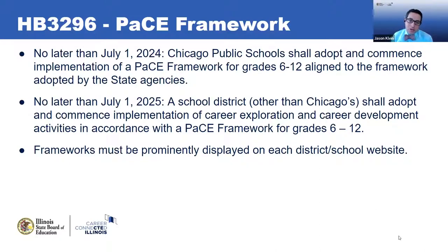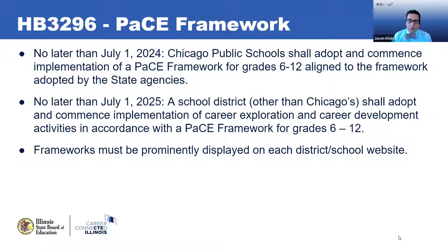All school districts are required to either adopt the state-provided framework — which is required to be updated by the state agencies by July 1, 2023 — or a locally written version, and post that to their website. Chicago Public Schools must adopt it by July 1, 2024, and all other school districts must adopt their framework and begin implementing activities by July 1, 2025.